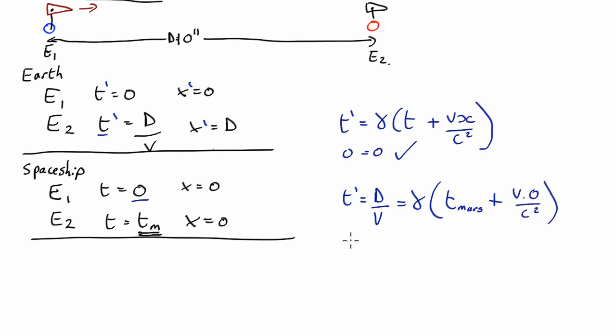So what we find out is that d/v = γ t_Mars. So the time needed in the spaceship's frame of reference to get to Mars, t_Mars, is going to be equal to d/v times 1/γ.